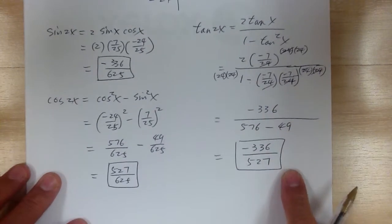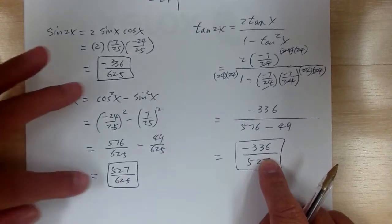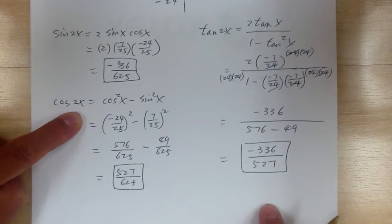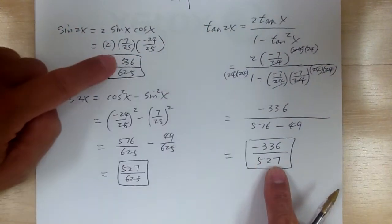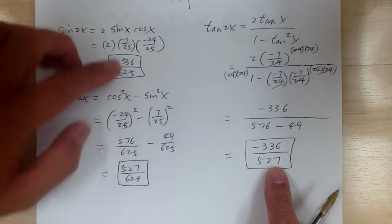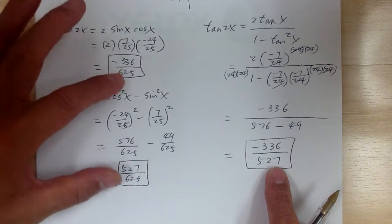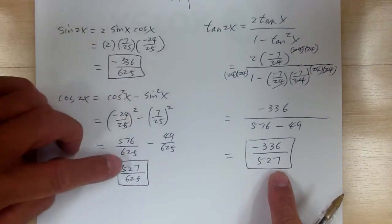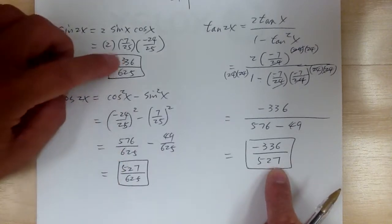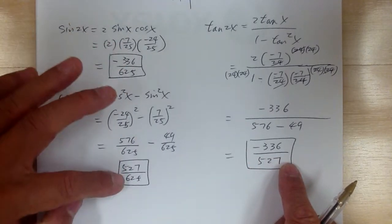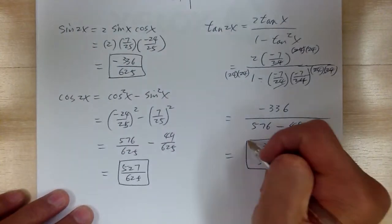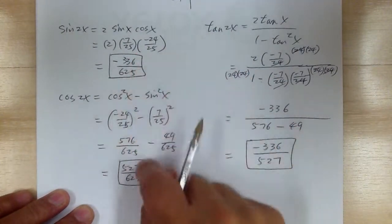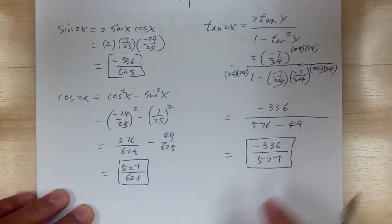That's the long way. Another method: if you trust your previous answers, tangent equals sine over cosine. So just divide sin(2x) by cos(2x) — put negative 336 over 527 — the 625 cancels out, and you end up with negative 336 over 527, which matches. So you can use that as a way to check your answer, because if they match, you know you did it correctly.